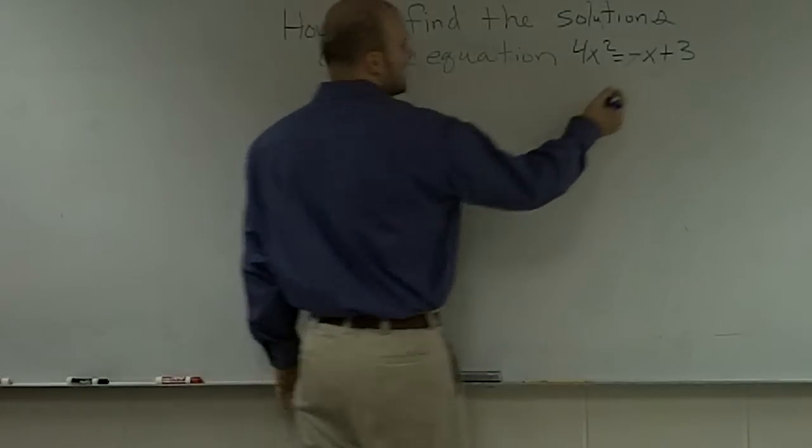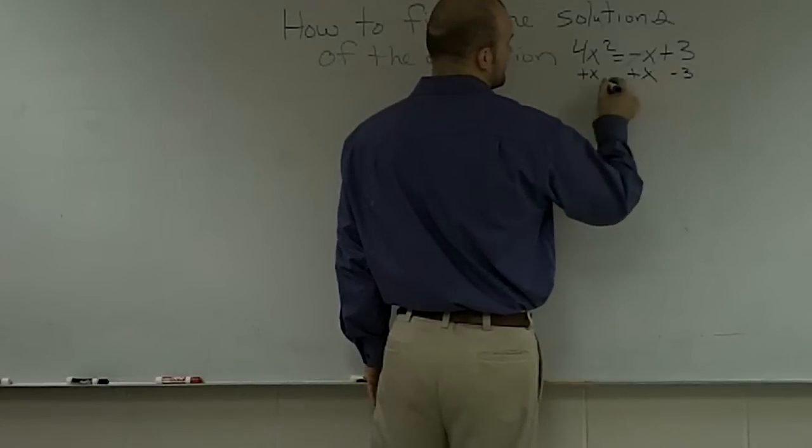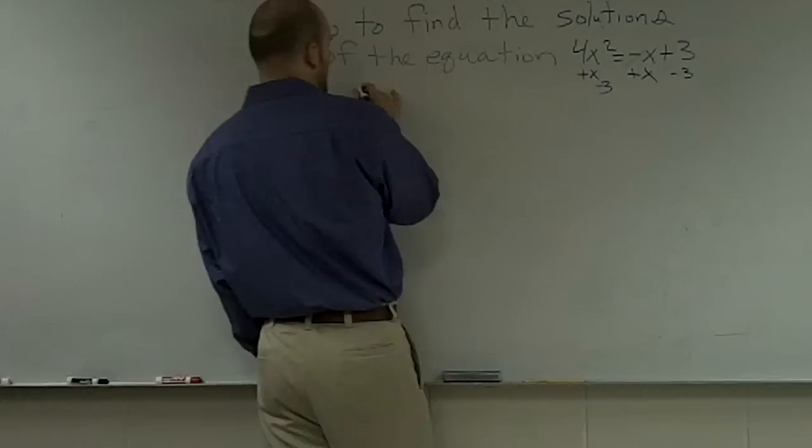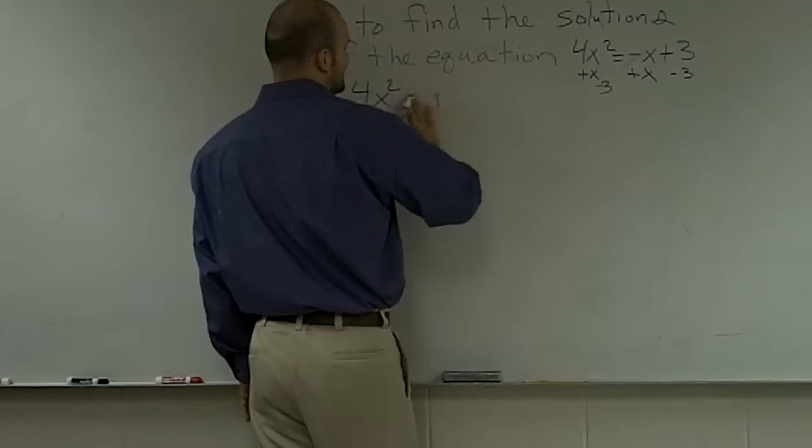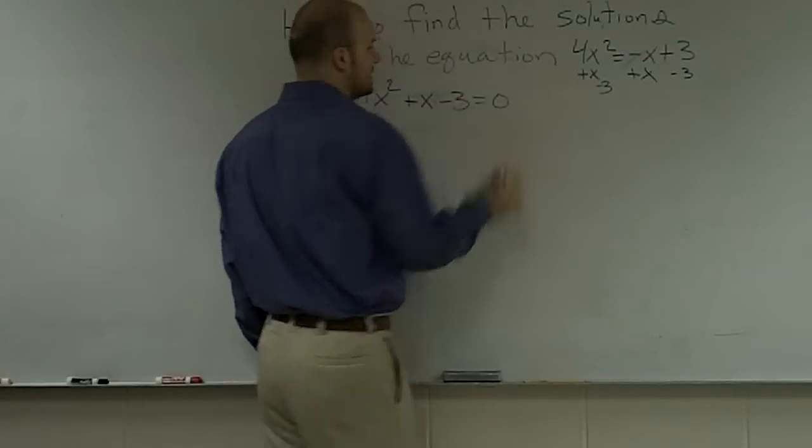So what I'm going to do is I'm just going to add an x to both sides, and I'm going to subtract 3 from both sides. That's going to cancel out and give me 0, so therefore I will now obtain 4x squared plus x minus 3 equals 0.